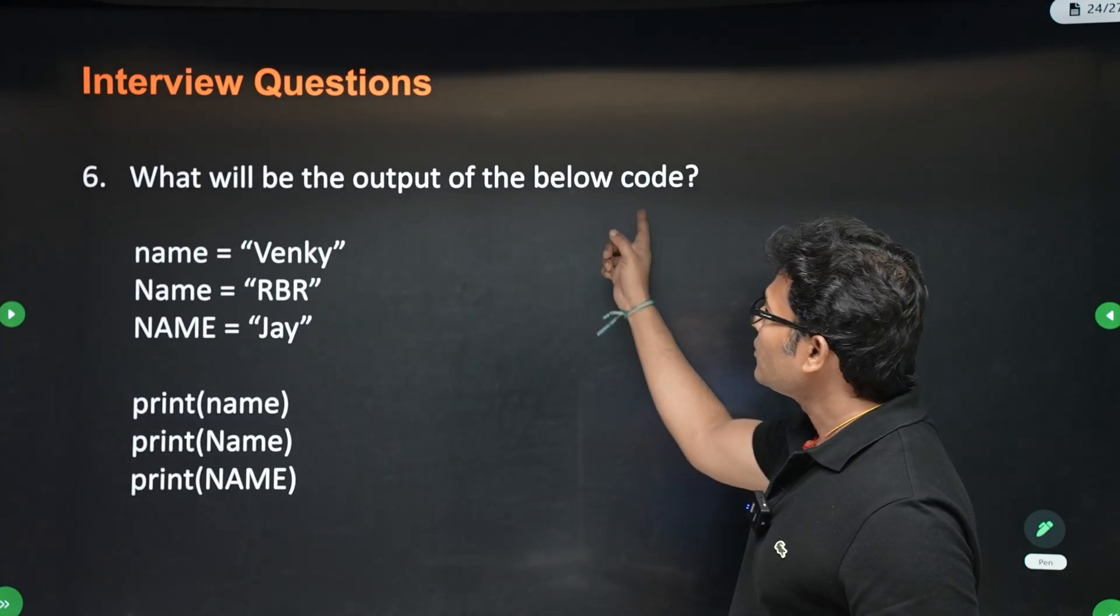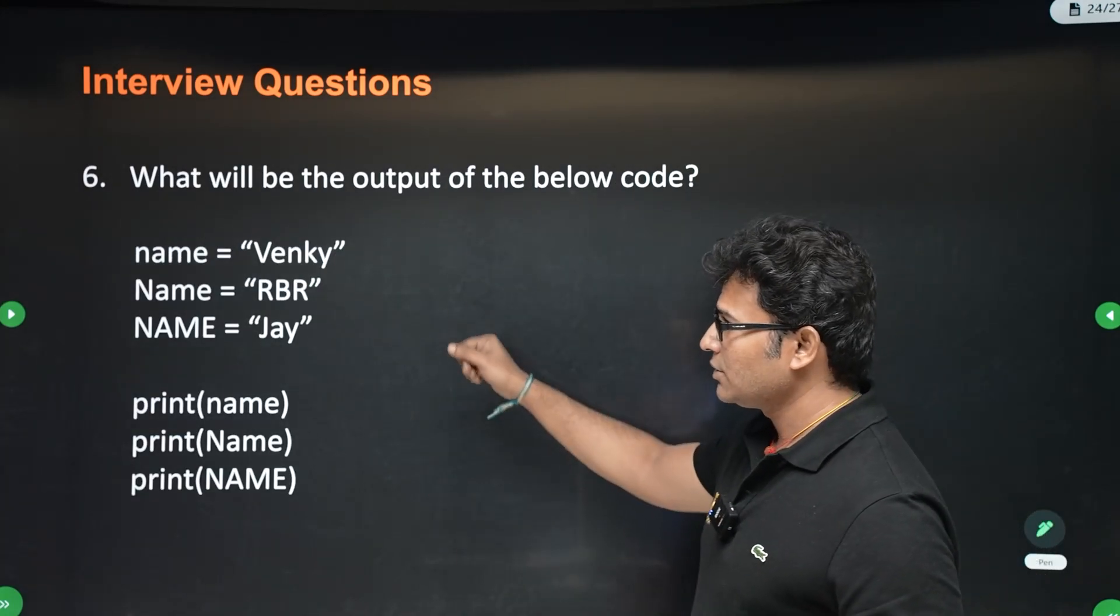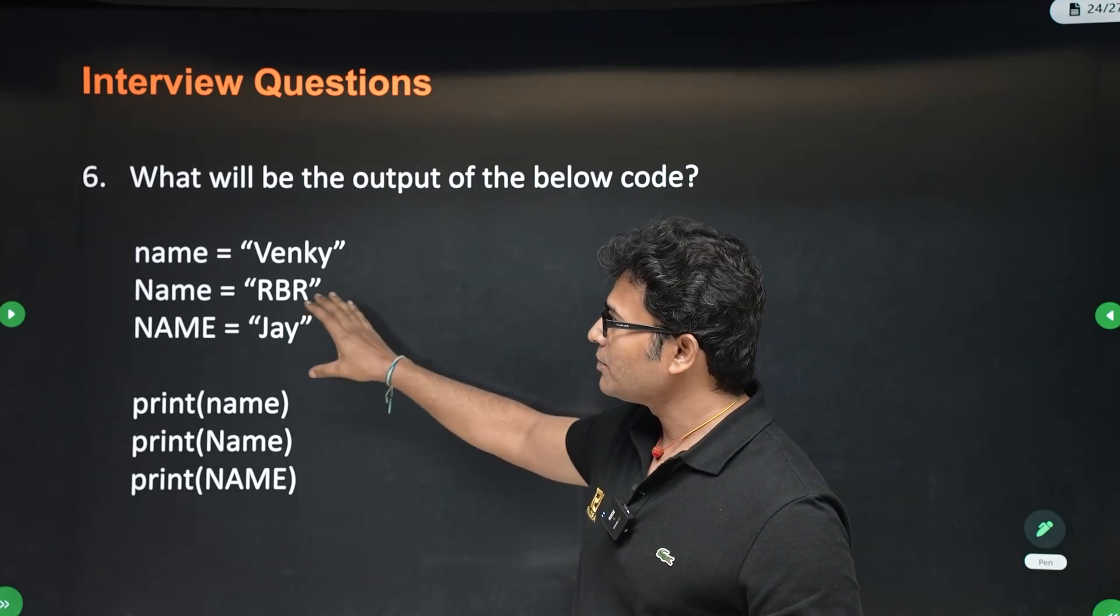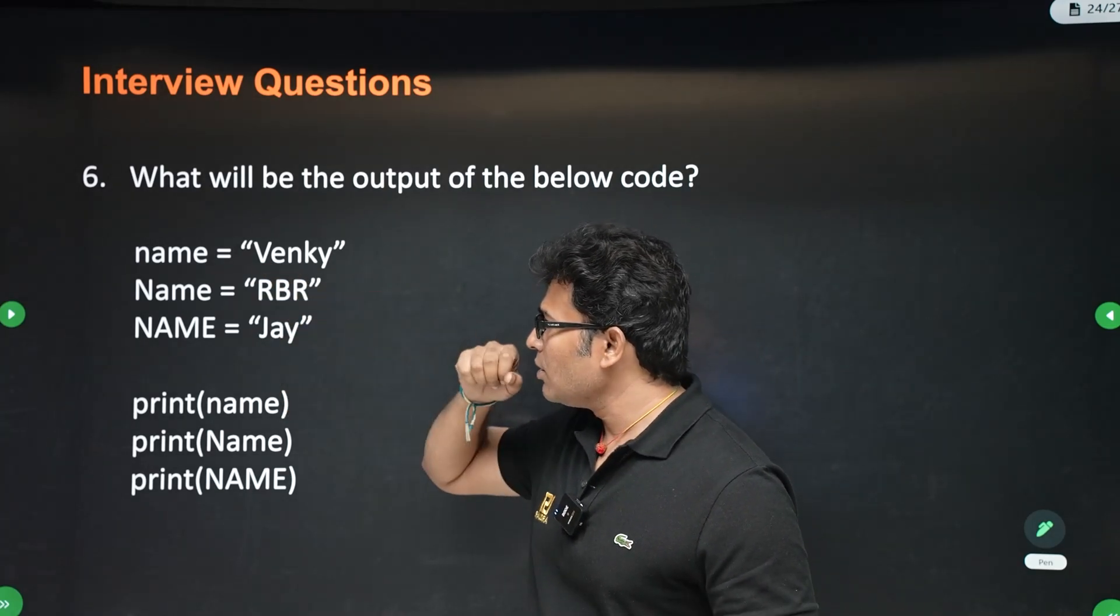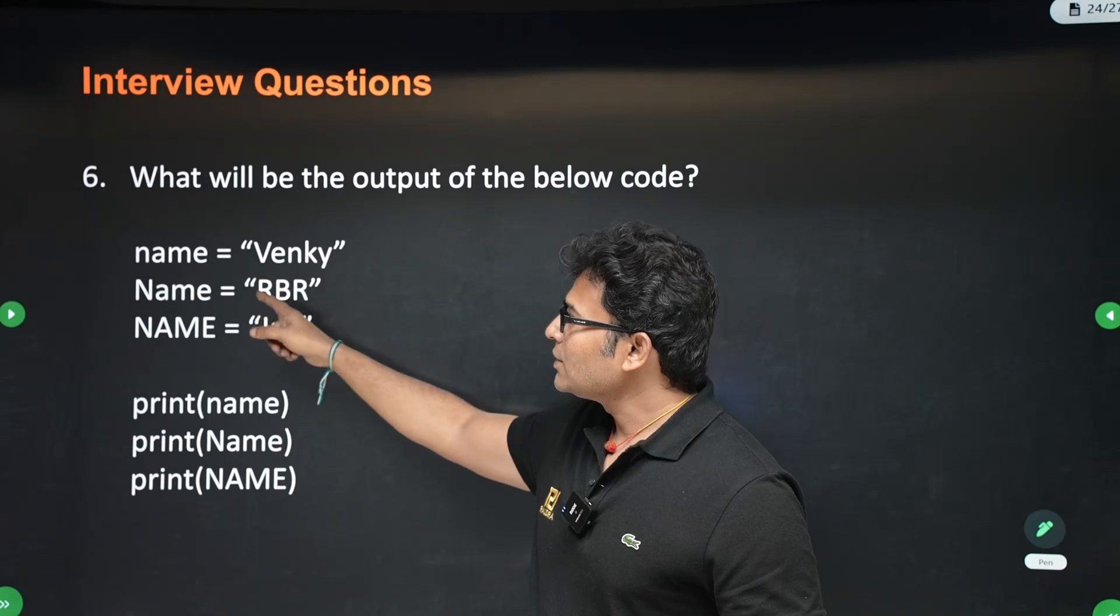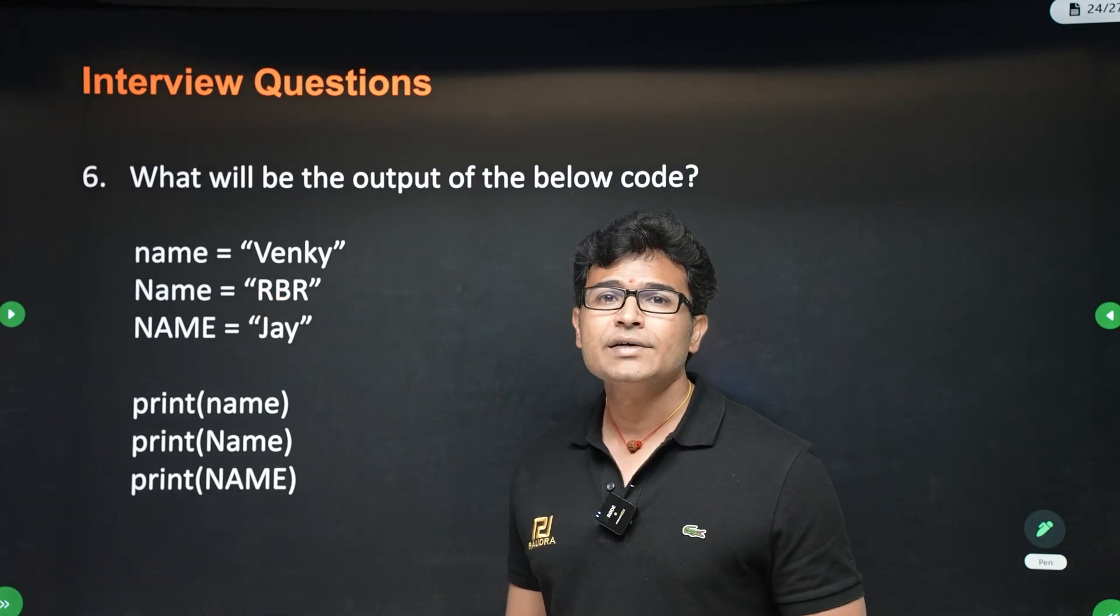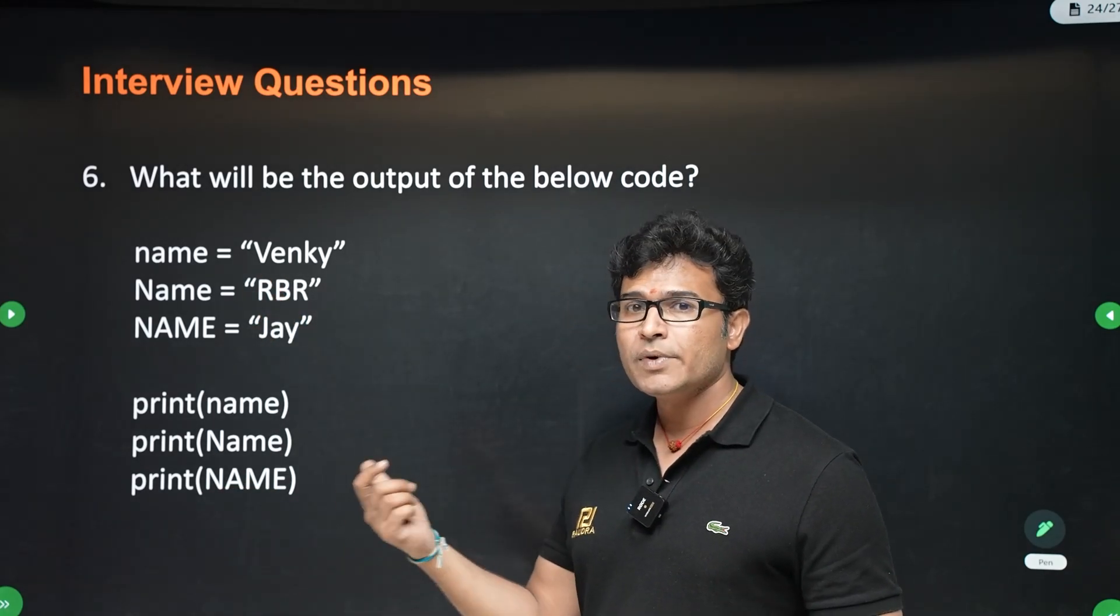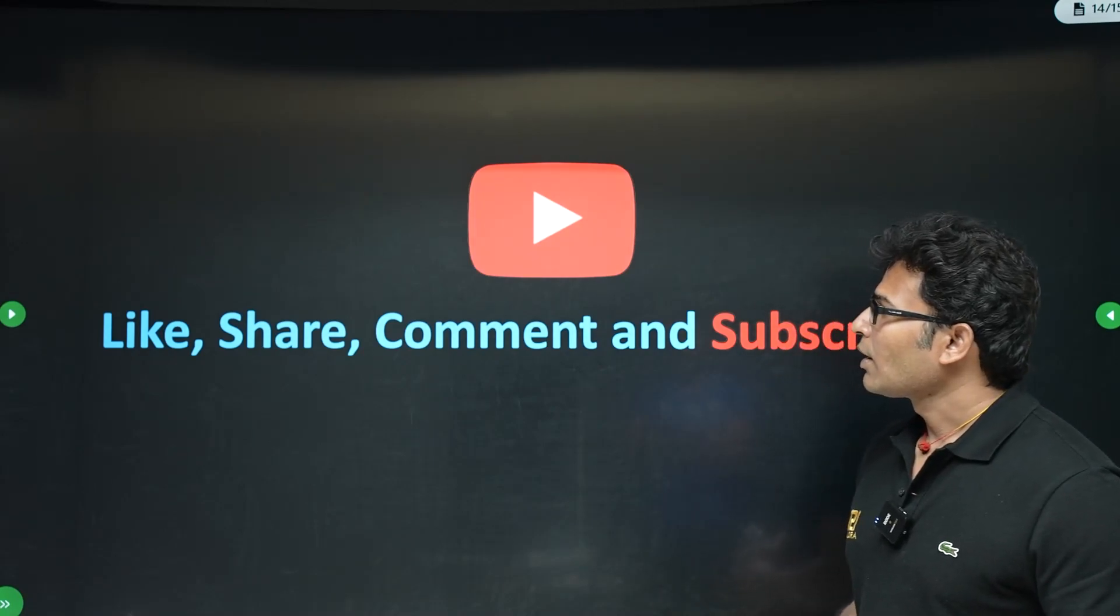Which of the following is valid syntax? You cannot use if as a variable name. If you are using if as a variable name, that will be syntax error. You are not supposed to use any keywords. Now, this is fine because it is a variable number one. And what will be the output of the below code? We have already seen this in the lecture. What I want you to learn from this example is Python is case sensitive. If you change the case, the variable will change. The variable will be a new one.